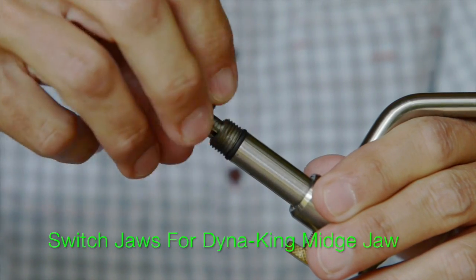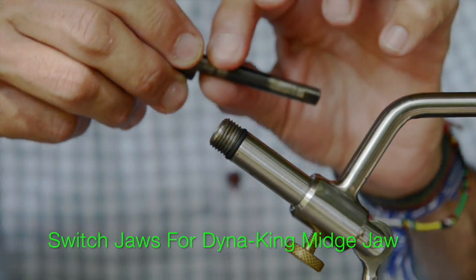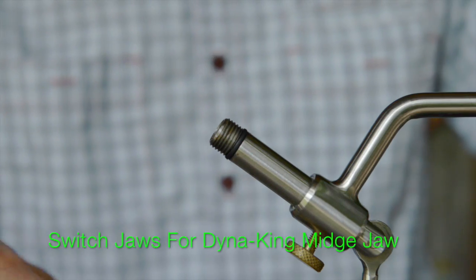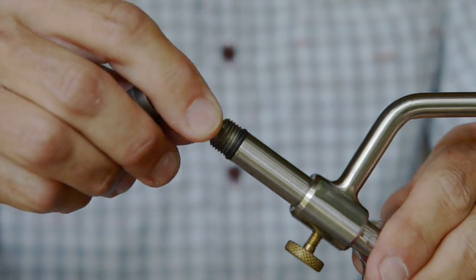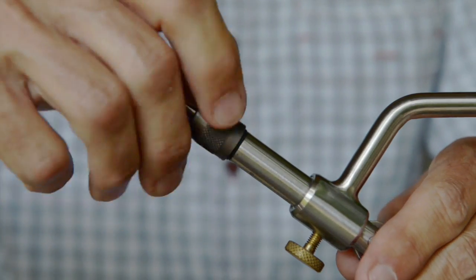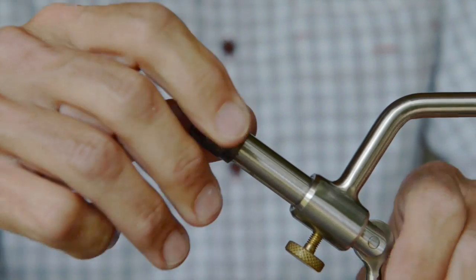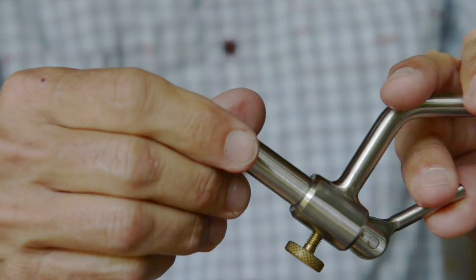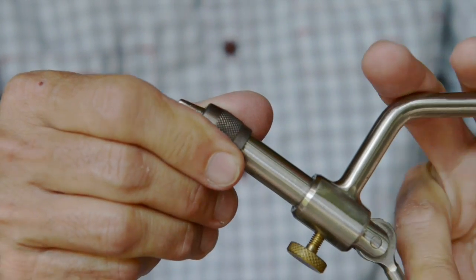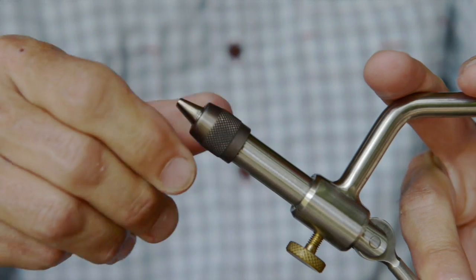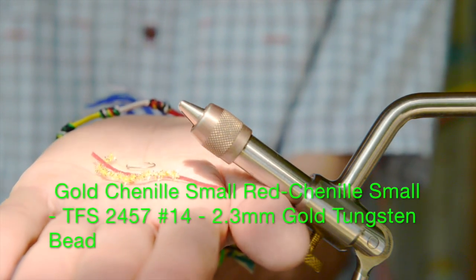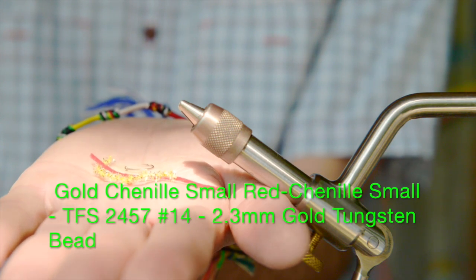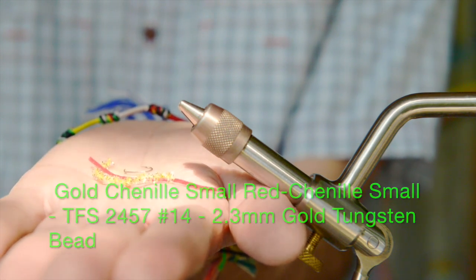So as I was saying, this is a real easy to change out vise with changing from the regular sized jaws which are for big flies really to these midge jaws. And changing these over makes it really easy to get around on these small hooks, and it holds the very small hooks much better than the larger one. Of course, it's an investment.